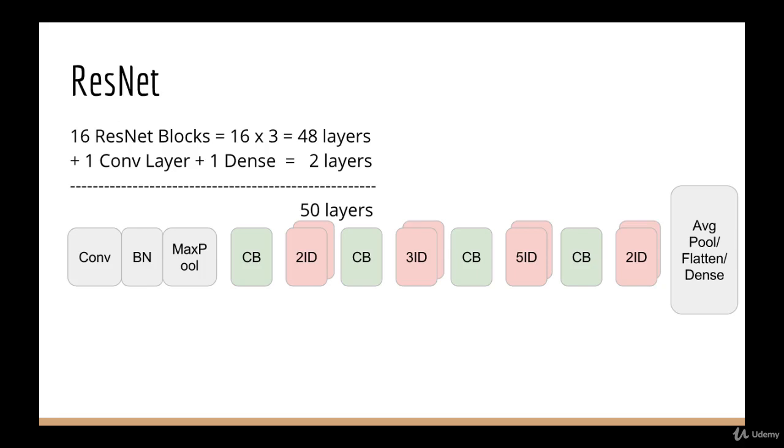Now if you count these, there are 16 ResNet blocks, which gives us 16 times 3, which is 48 layers, and then there's the final convolution and the last dense layer, which totals 50 layers.